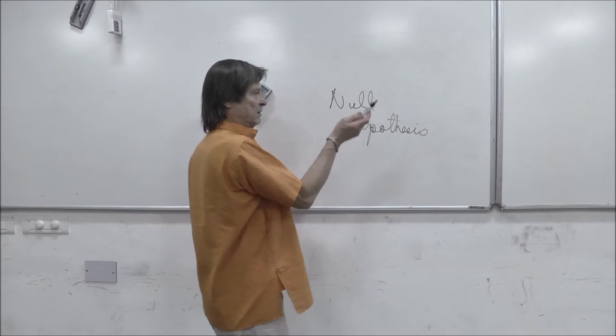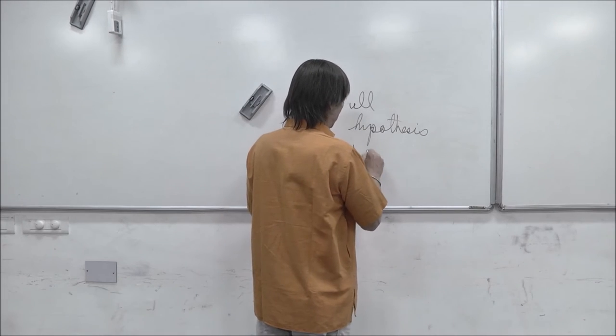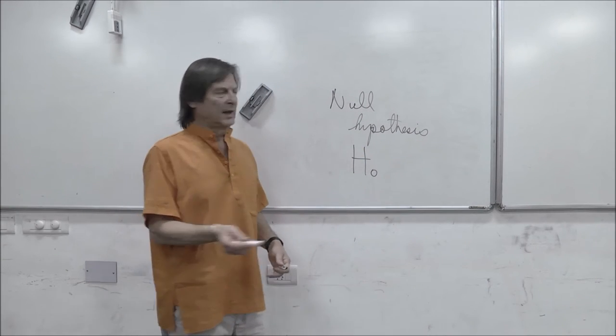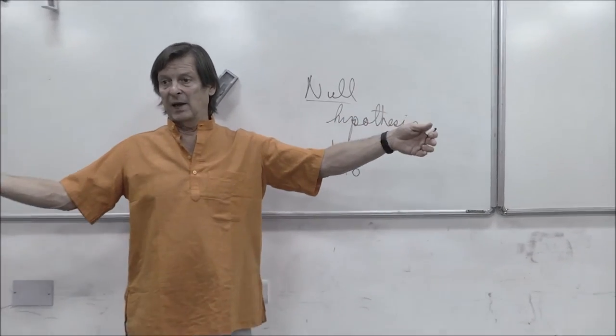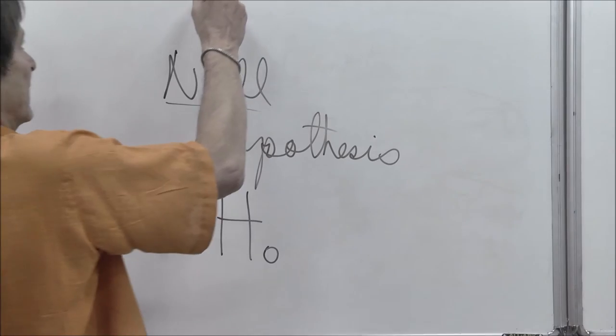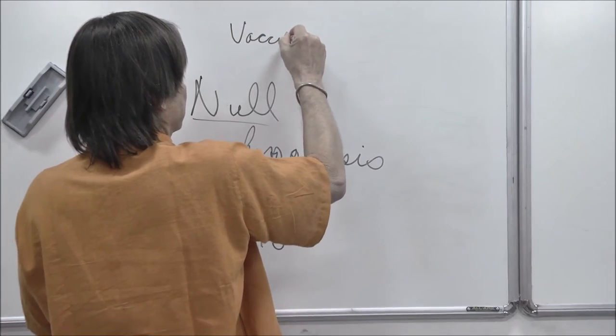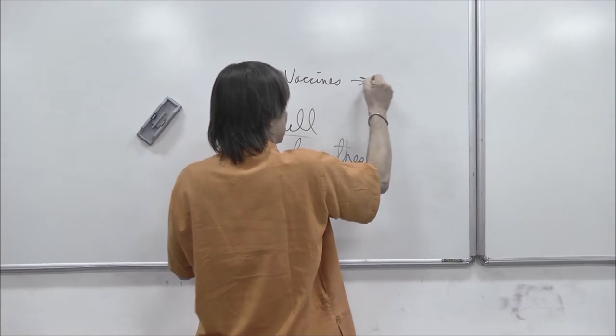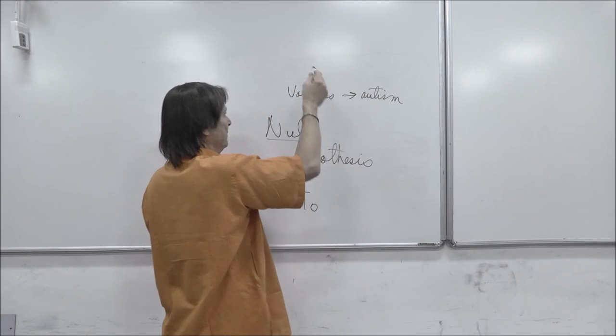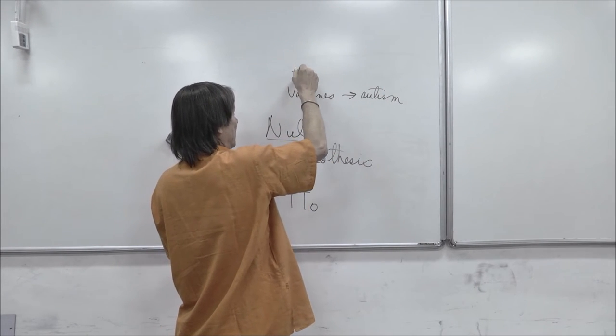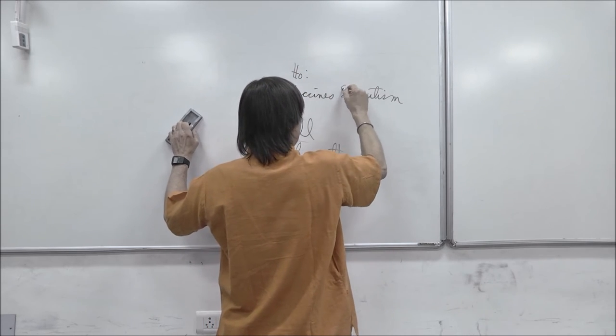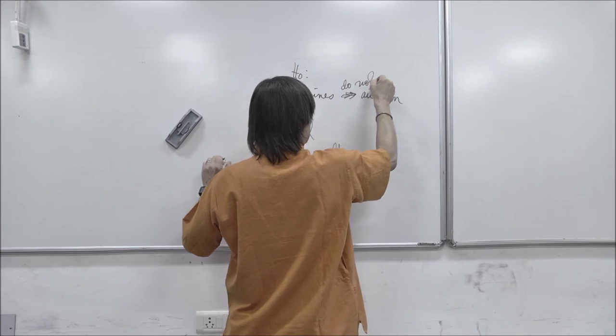And the null hypothesis we're going to symbolize as a capital H sub O. It gets its name from null meaning empty set in mathematics. So what it says is, if we think that vaccines cause autism, which they don't, the starting position in the null hypothesis would be that vaccines do not cause autism.